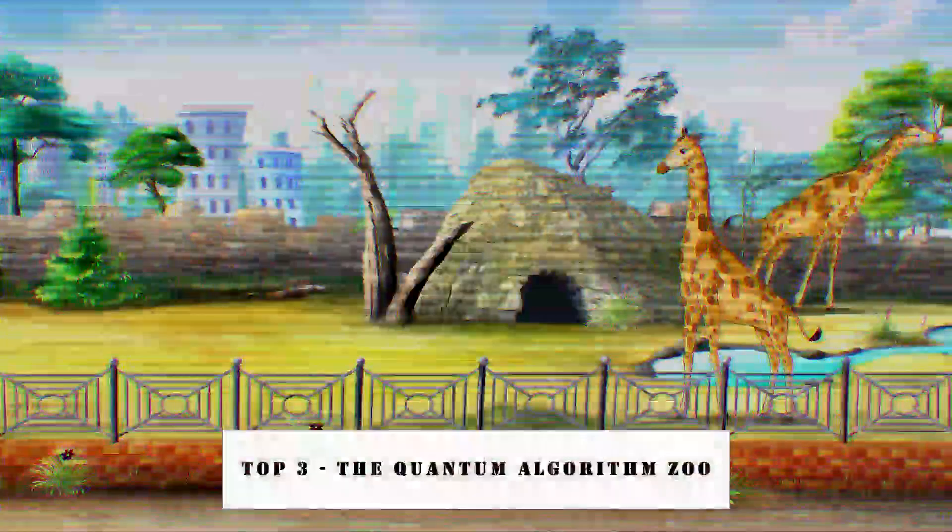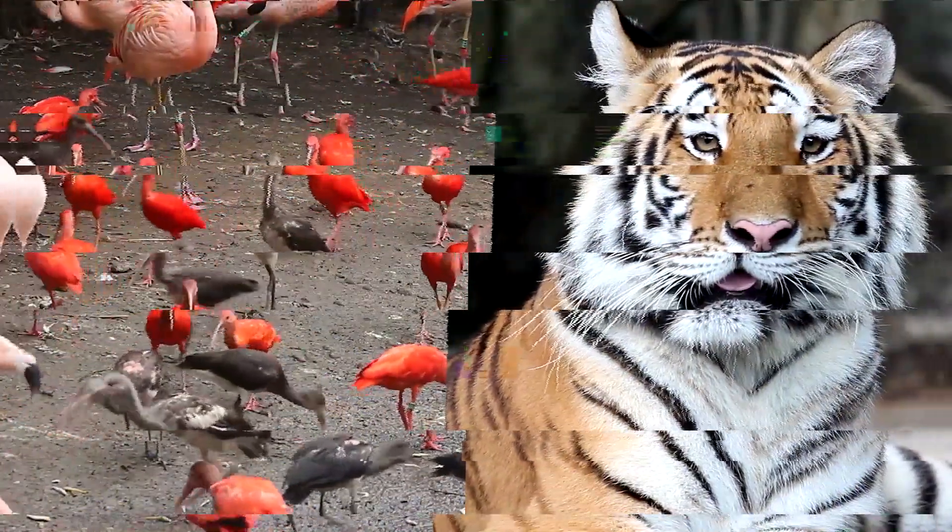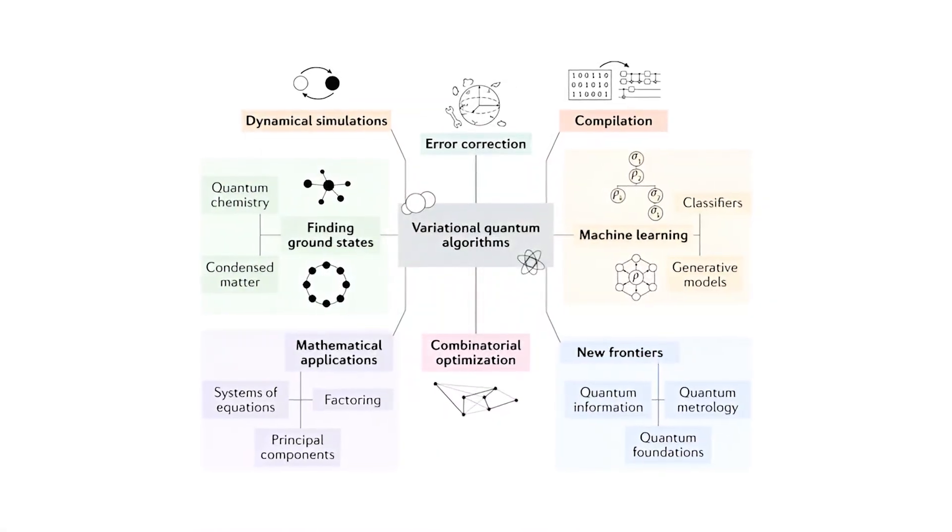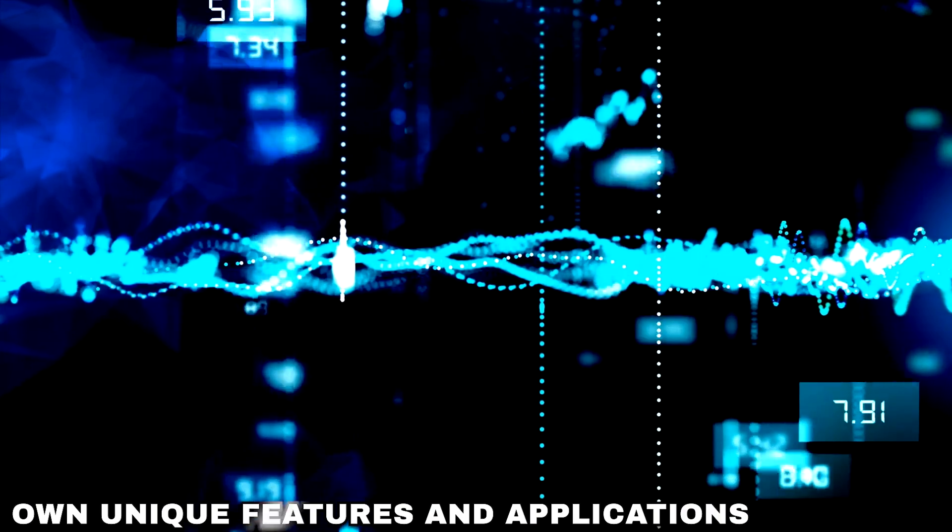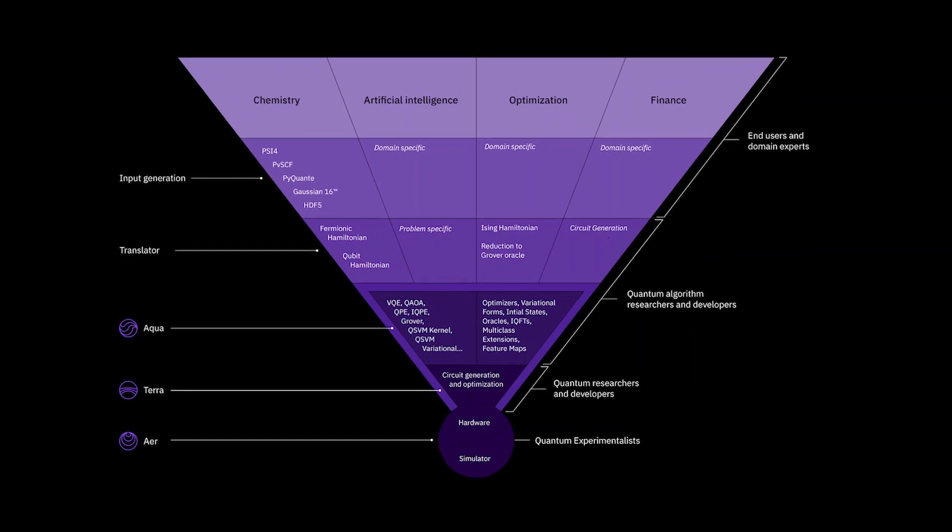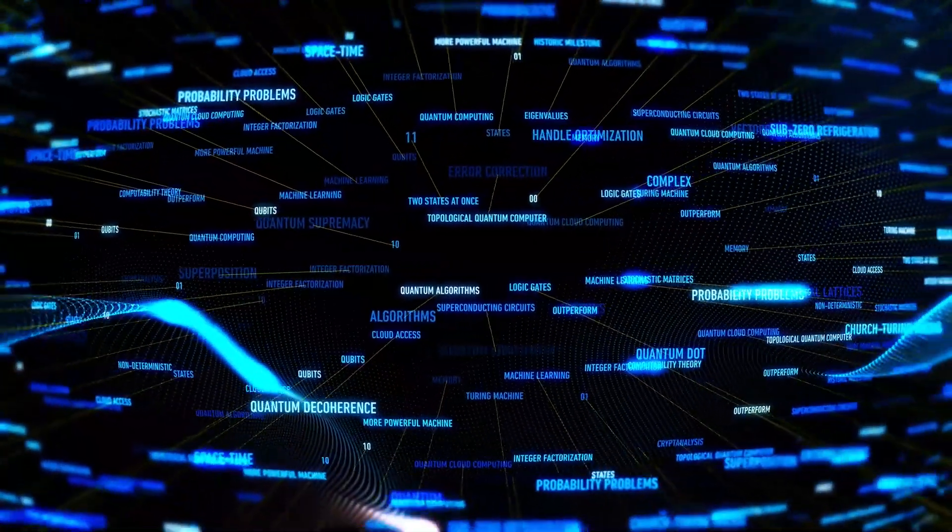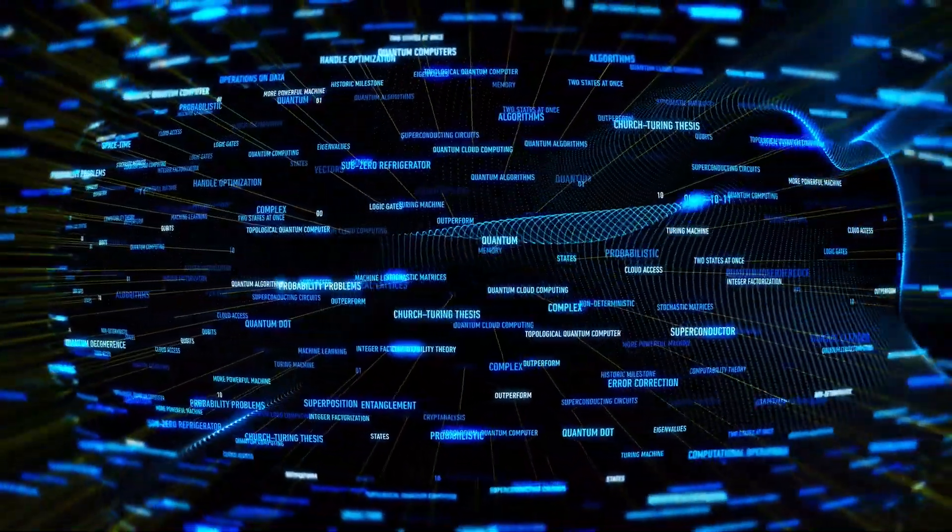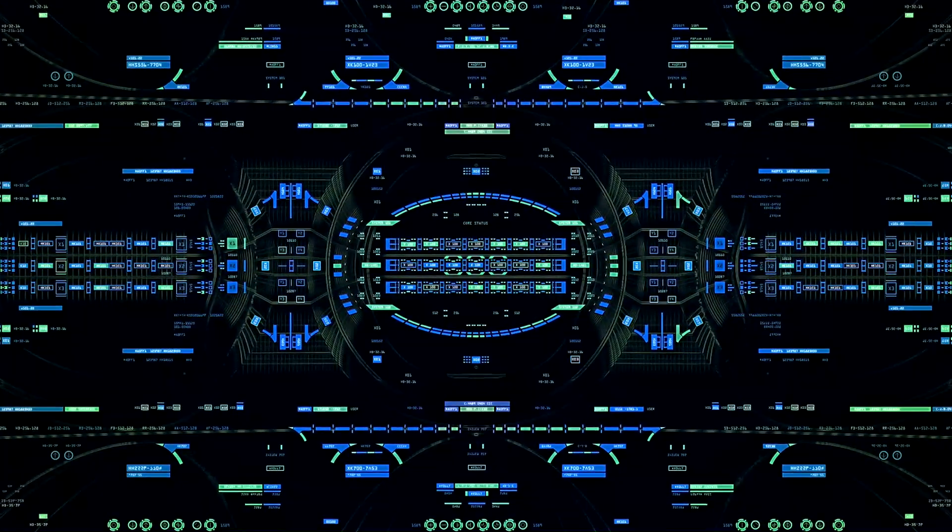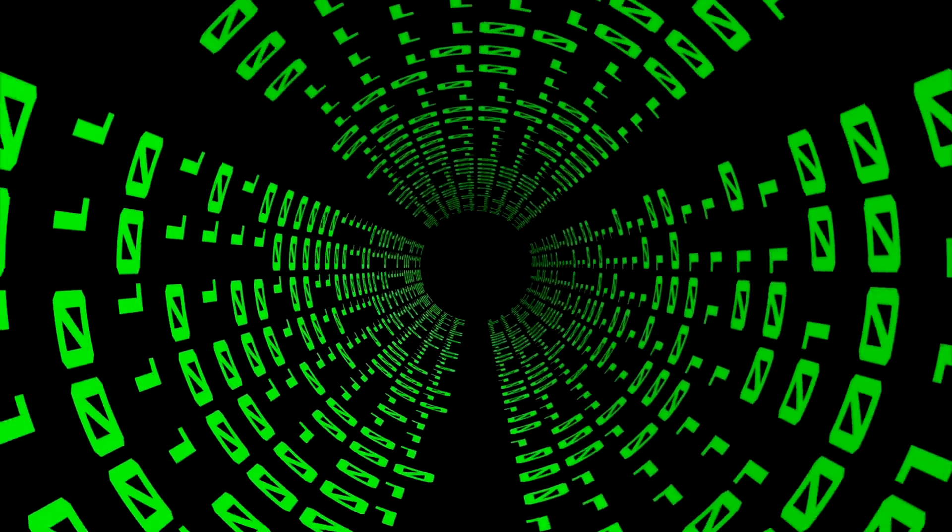Top 3. The Quantum Algorithm Zoo. Just as a zoo exhibits many different species, the Quantum Algorithm Zoo consists of many different algorithms. Each of them has its own unique features and applications. This algorithm is an interesting combination of quantum algorithms. Each is designed to exploit unique principles of quantum mechanics to solve specific computational problems. Like any zoo, the Quantum Algorithm Zoo is constantly evolving as researchers introduce new algorithms and refine existing ones.